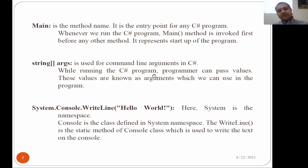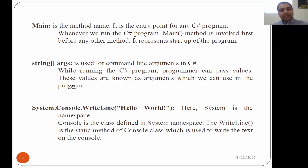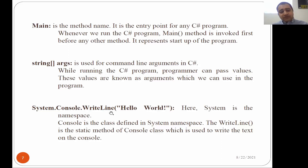While running a C# program, the programmer can pass values — these values are known as arguments, which we can use in the program. Whatever values you use will first be stored in the string args array. It is a string type array, and whatever output you want will be saved in variables, and those variable values will come as output to display on the screen.